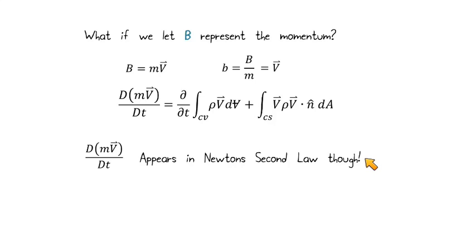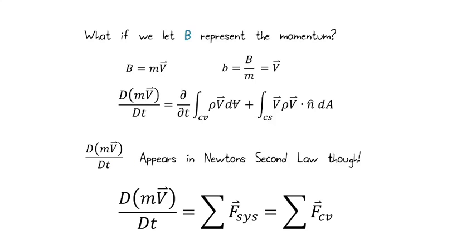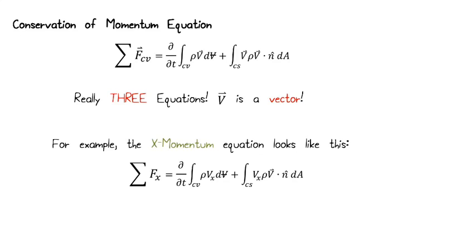Our laws of physics really apply to the system — the Lagrangian perspective. This term is what we have with Newton's second law: the change of momentum with respect to time equals the sum of forces on the system. In a differential case, we allow the system and the control volume to coincide at an instant, so the sum of forces on the system and on the control volume are the same. That gives us an equation: the sum of forces acting on the control volume equals the rate of change of momentum within the control volume plus the momentum that crosses the boundary.